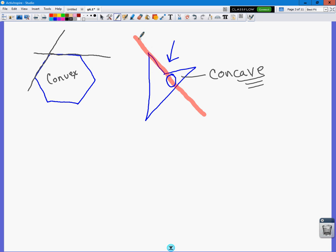Questions about the difference between convex and concave. If it's concave, if you draw a line containing a side, part of that line will pass through the interior of the polygon. If it's convex, it will never pass through the interior.